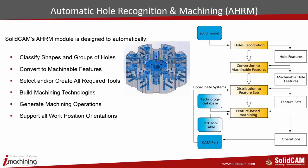AHRM basically takes your solid model, and when you open up AHRM, it recognizes all of the holes on the part — no matter what direction they're in. These holes are turned into hole features. When they're recognized, they're then converted into machinable features — different types of shapes and elements broken up into what are called machinable segments. After all this is done, it's distributed into feature sets.